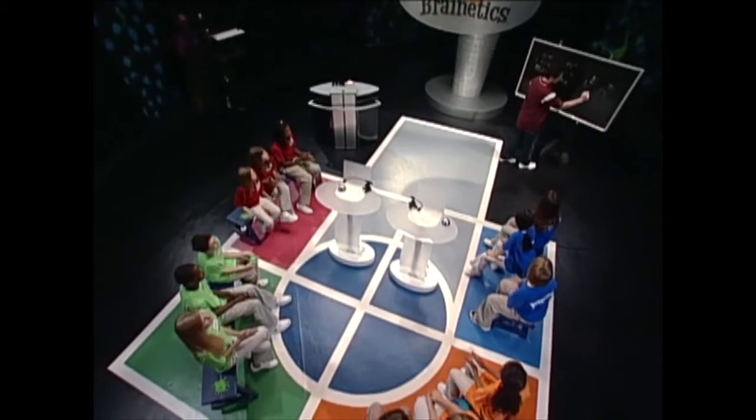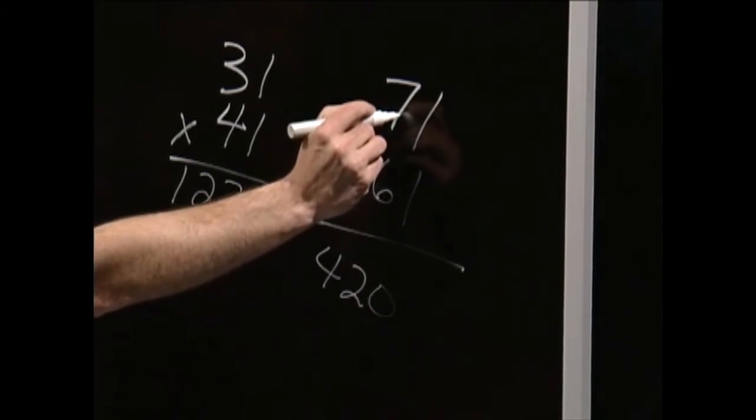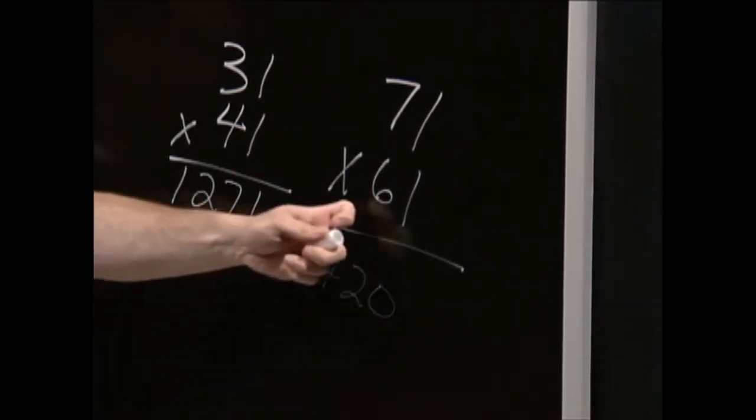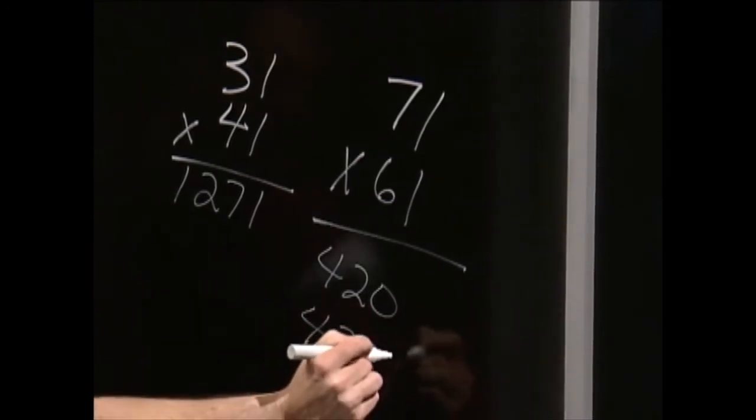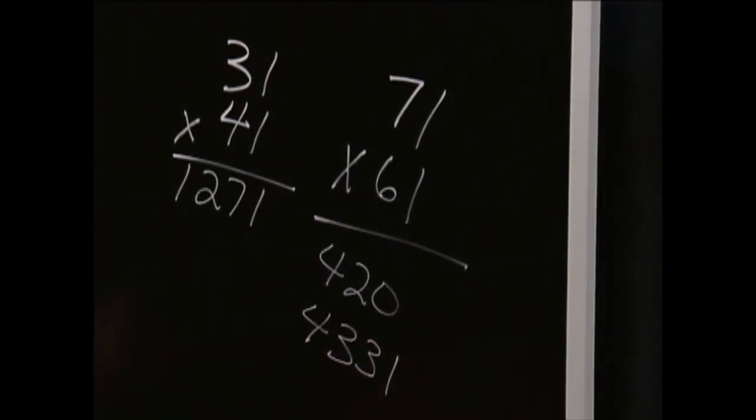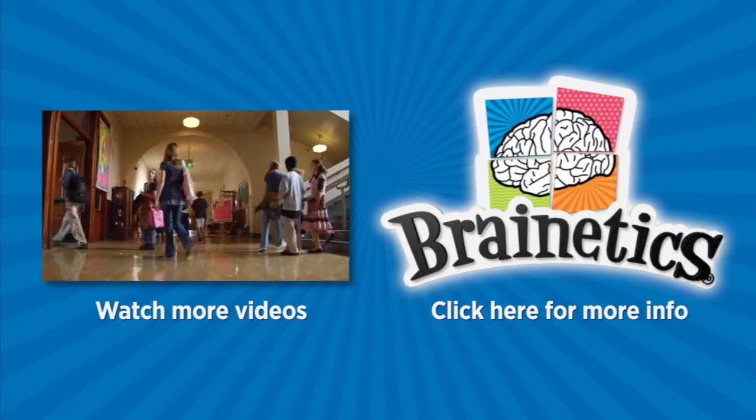Seven times six is forty-two. Make it four twenty. Plus seven is four twenty-seven. Plus six is four thirty-three. I know the math is starting to get a little tougher. Add the one. Four, three, three, one.